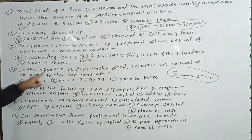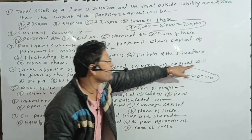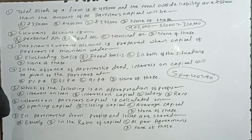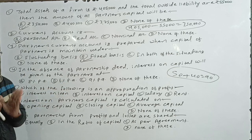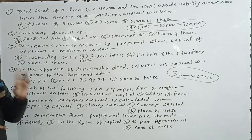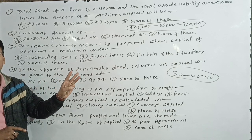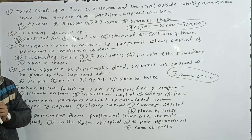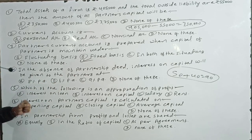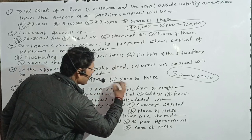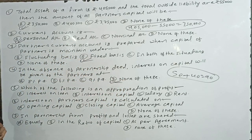In the absence of a partnership deed, interest on capital will be given to the partners — at what rate? In the absence of a partnership deed, any partner does not get interest on capital, no interest on drawings is charged. The options are 8%, 6%, 9%, or none of these. The answer is: no interest on capital is given.